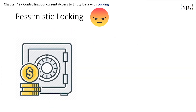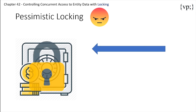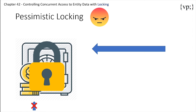Next, let's take a look at pessimistic locking. Pessimistic locking takes this even further. When a transaction is requested from the database, the persistence provider creates a transaction that sets a long-term lock on the data until the transaction is completed, which prevents other transactions from modifying or deleting the data until the lock has ended.